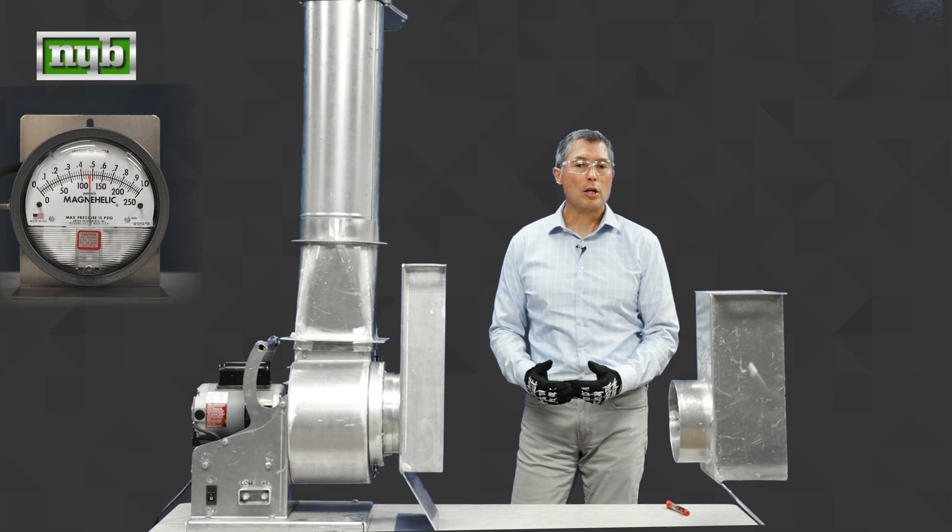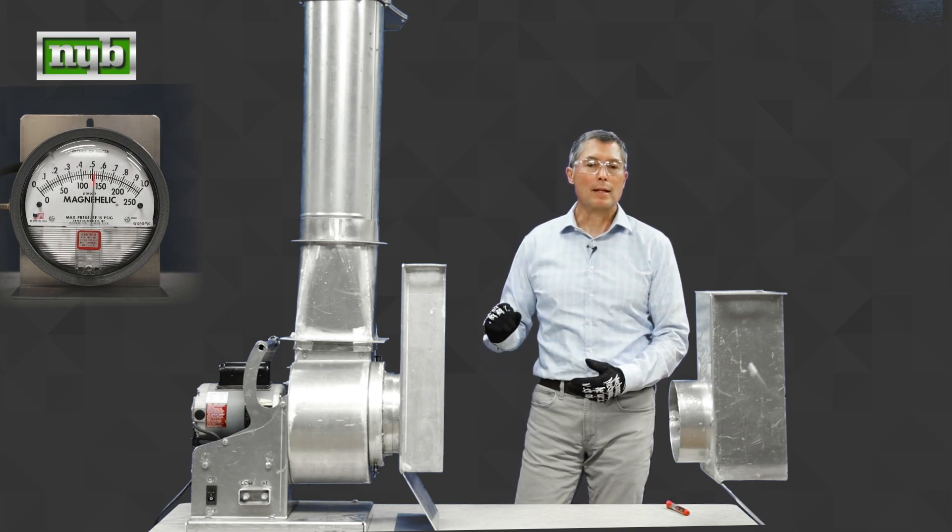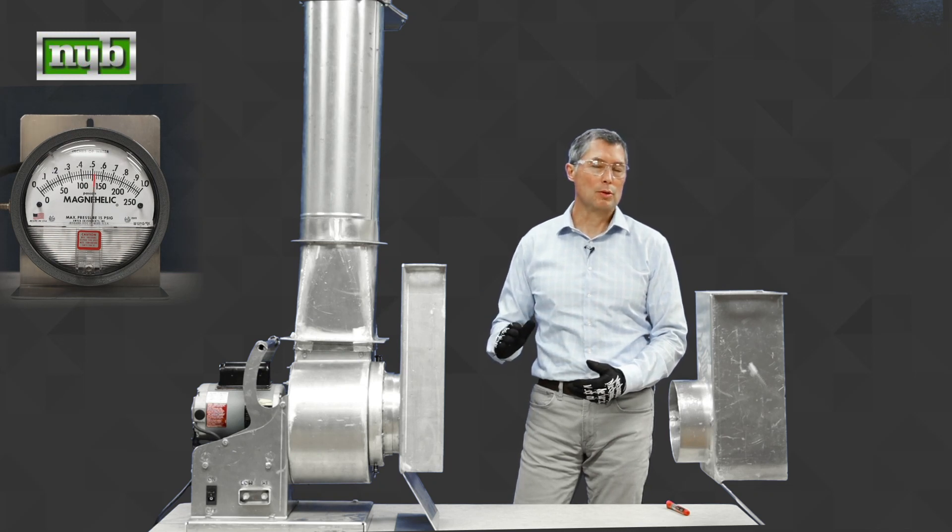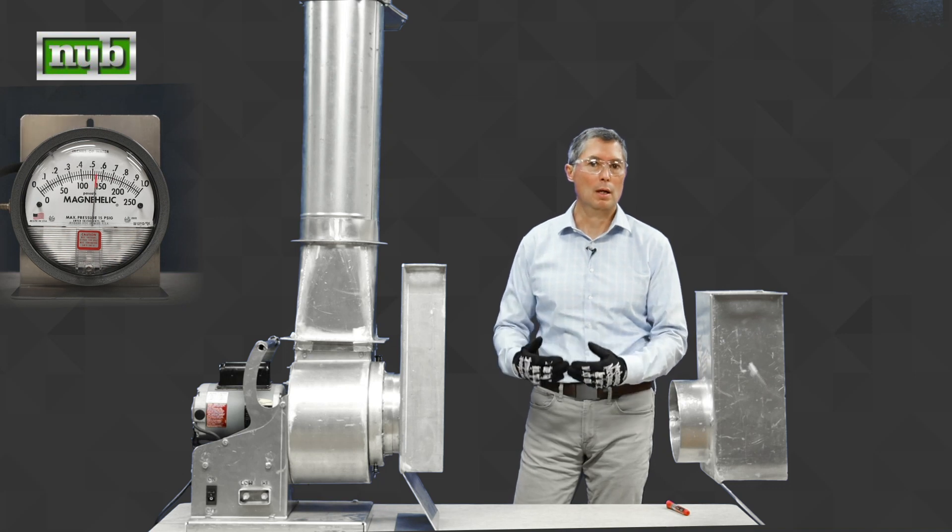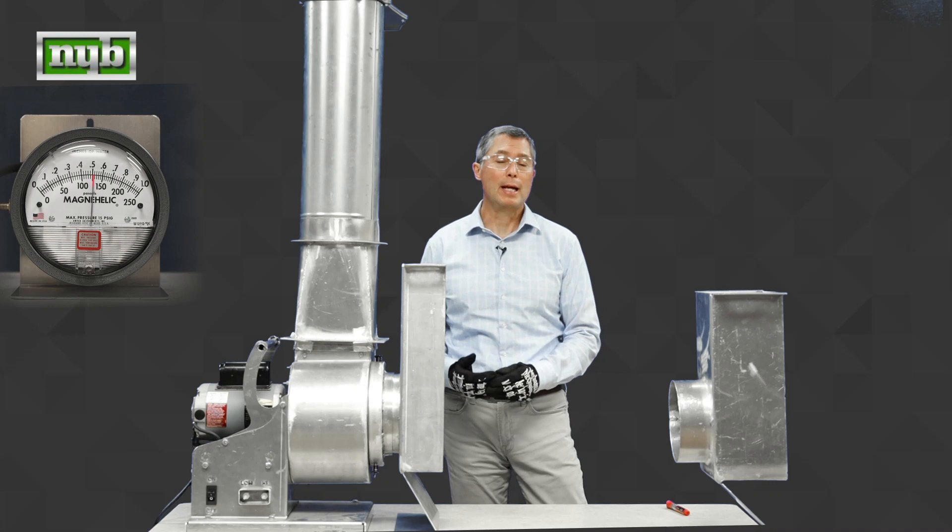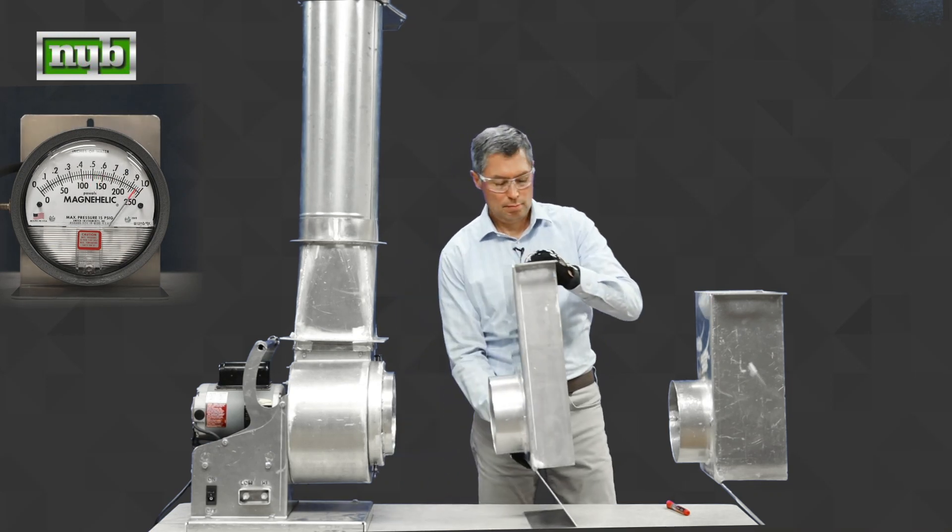And then finally, audibly, you'll notice that there's some droning effects with this. As that needle goes up and down, the sound of the tone, or the sound tone of the fan, goes up and down as well. And that's also an indication that the fan is operating in an unstable region.